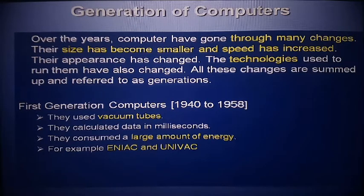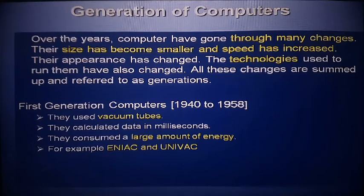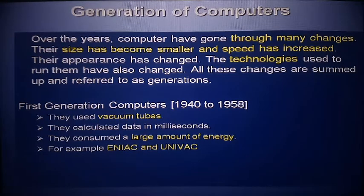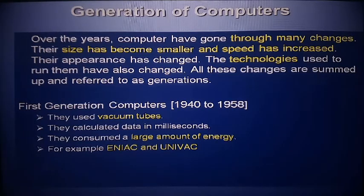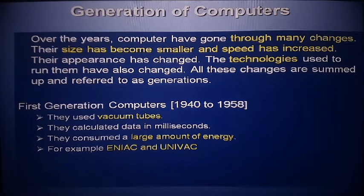The first generation of computers was from 1942 to 1958. They used vacuum tubes and calculated data in milliseconds. They consumed a large amount of energy — that is, a large amount of electric power. Examples include ENIAC and UNIVAC computers. This type of computer used vacuum tubes, consumed a lot of energy, and was also very large in size.